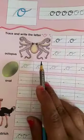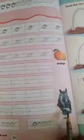O for octopus, O for oval, O for ostrich, O for orange, O for owl.